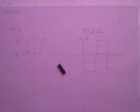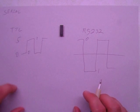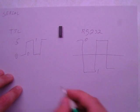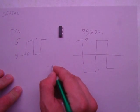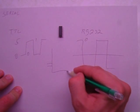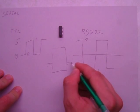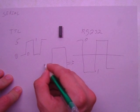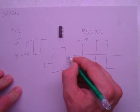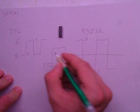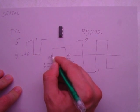This particular chip has two inputs and two outputs on each side. So there's two inputs on the TTL that go to two outputs on the RS-232 side, and then there's two inputs on the RS-232 side that go to two outputs on the TTL.